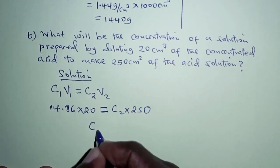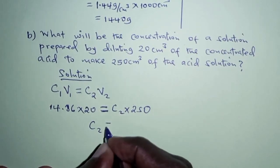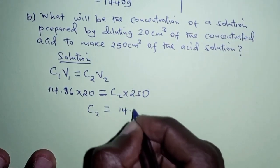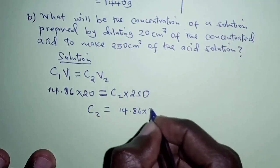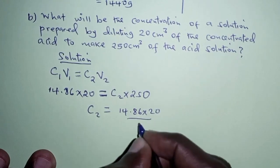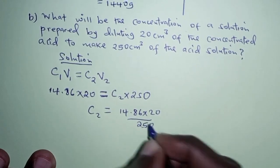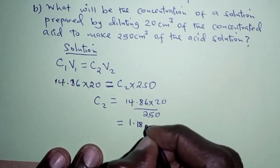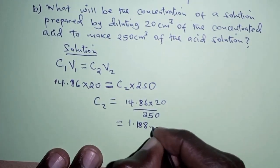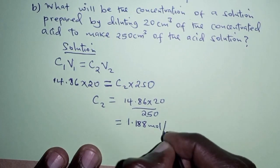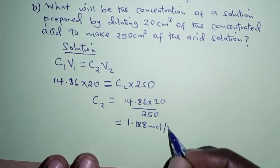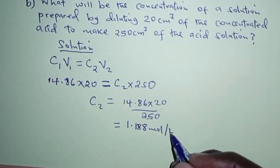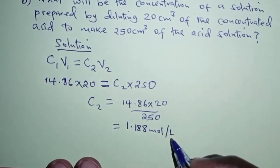The concentration of the solution prepared is therefore 14.86 times 20, all over 250, which gives us 1.188 moles per liter. This is the concentration of the solution to be prepared, and with this we mark the end of the solution to this problem.